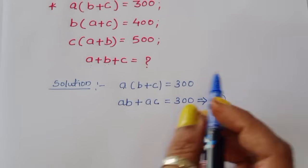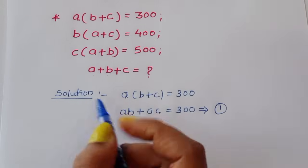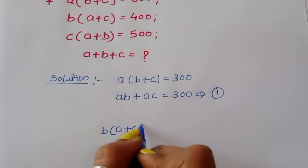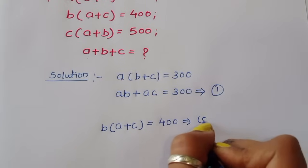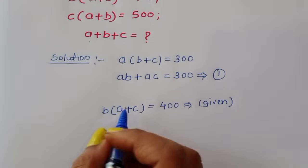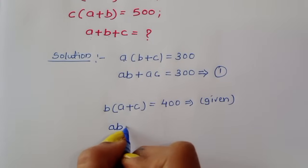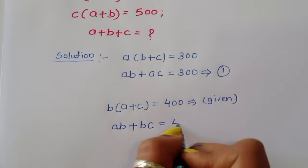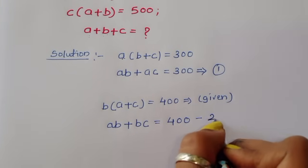Next, B times (A plus C) is equal to 400. Expanding by multiplying the term, AB plus BC is equal to 400. This is equation number 2.